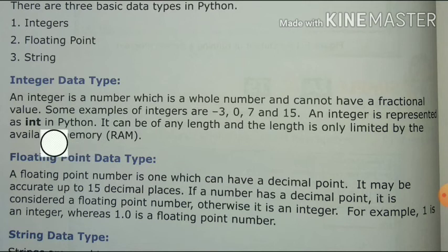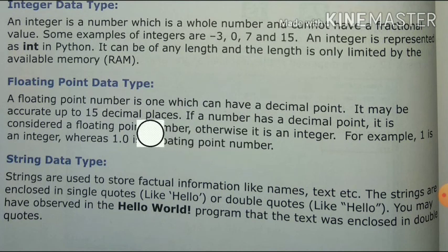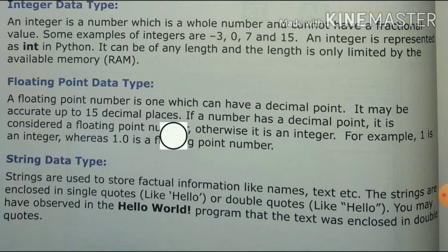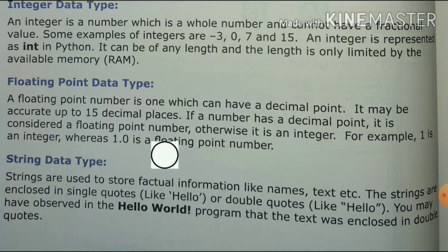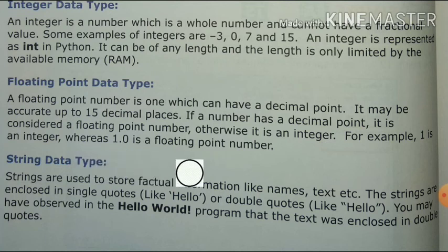In Python, we represent the integer as int. It can be of any length depending on the available RAM memory. Floating point data type: a floating point number is one which can have a decimal point. It may be accurate up to 15 decimal places. If a number has a decimal point, it is considered a floating point number. If there is a number with a decimal, it will be a floating point number; otherwise it will be an integer. For example, 1 is an integer, while 1.0 is a floating point number.